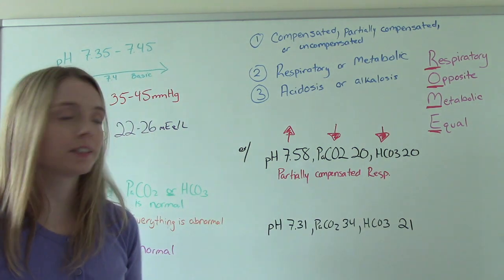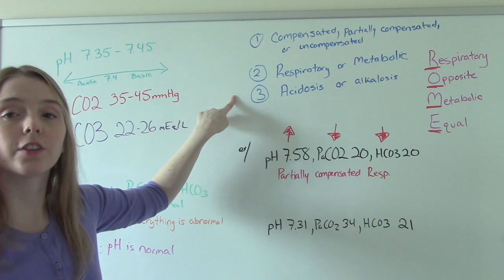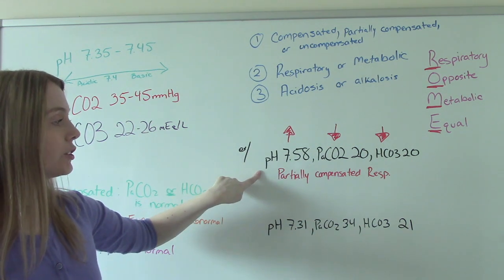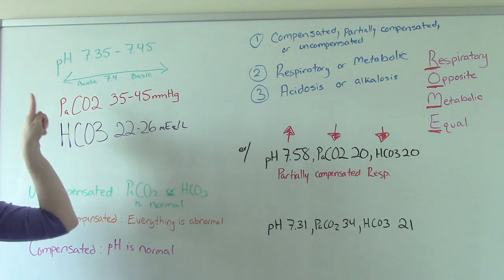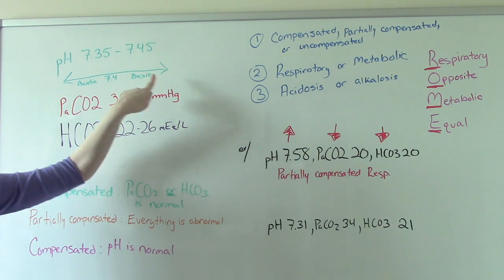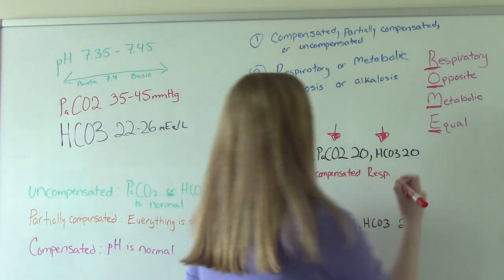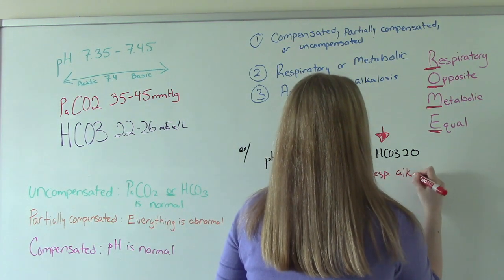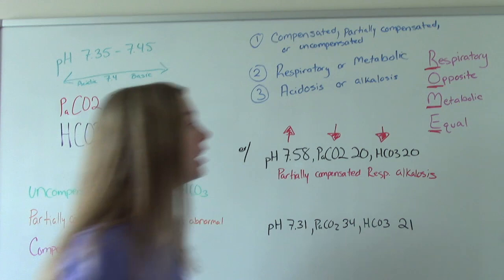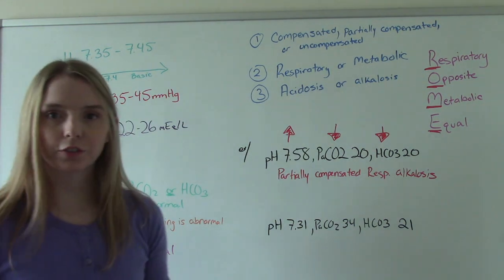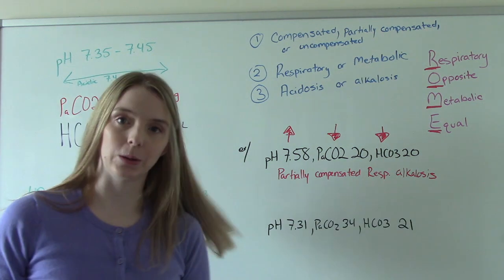And then the final step: is this acidosis or alkalosis? We look at our pH — it's a higher number, so it's more basic. So it is alkalosis. Putting it all together, this is partially compensated respiratory alkalosis.